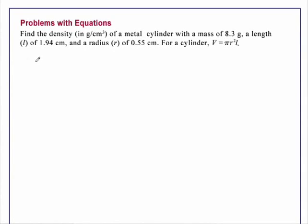Problems with equations. Find the density in grams per cubic centimeter of a metal cylinder with a mass of 8.3 grams, a length of 1.94 centimeters, and a radius of 0.55 centimeters. For a cylinder, the volume equals pi r squared l.